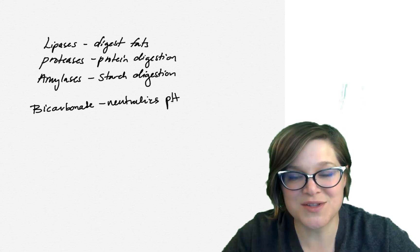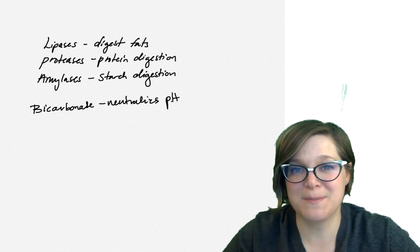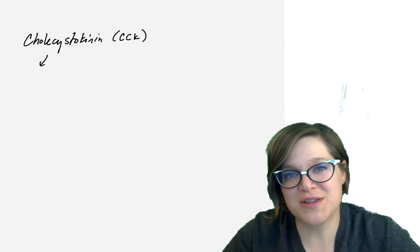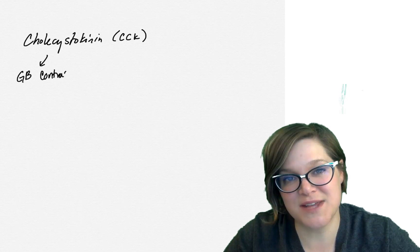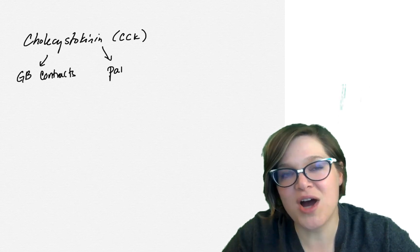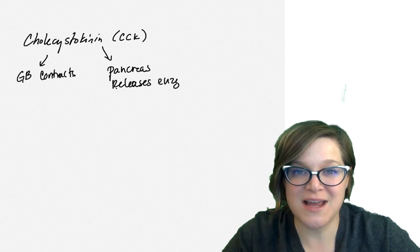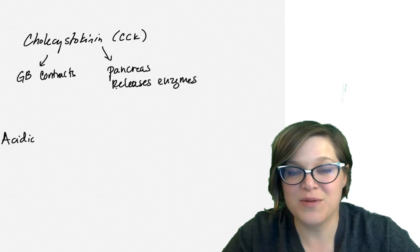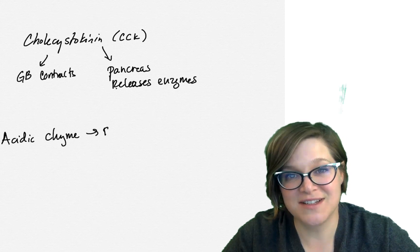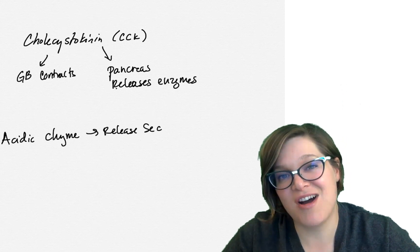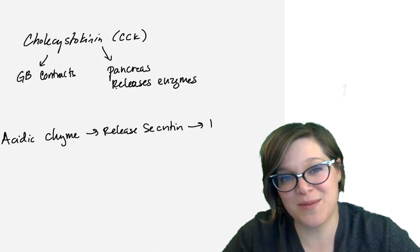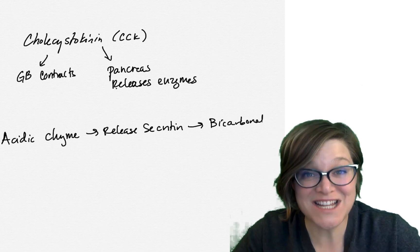So what triggers the release of all this stuff from the pancreas? Well, cholecystokinin, which we just learned about with the gallbladder, also causes the contraction of the pancreas. In causing contraction of the pancreas, it causes it to release those enzymes. But what causes it to release the bicarbonate? When there is acidic chyme within the duodenum, a hormone is released called secretin. And what secretin does is it causes that pancreas to release bicarbonate.